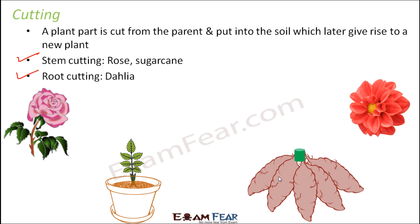So cutting means you cut a part of the plant and plant it in a separate pot to get a separate plant. This is actually reproduction because you are producing new plants of a similar type. It is an asexual mode because you do not need a male and a female parent — just a stem of any plant, so separate sexes are not needed.